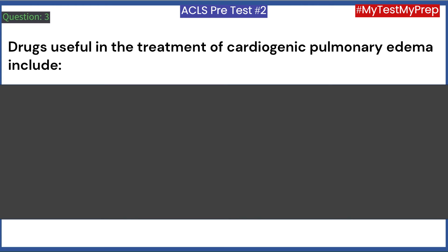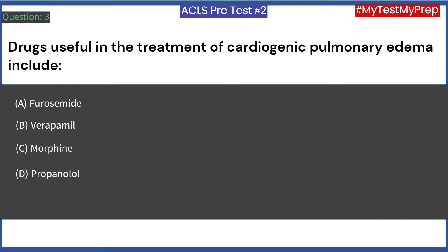Drugs useful in the treatment of cardiogenic pulmonary edema include: A. Furosemide. B. Verapamil. C. Morphine. D. Propranolol. E. Oxygen. Answer: A, C, E — Furosemide, morphine, oxygen.